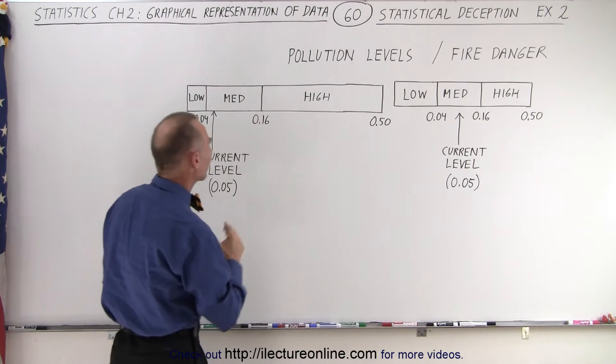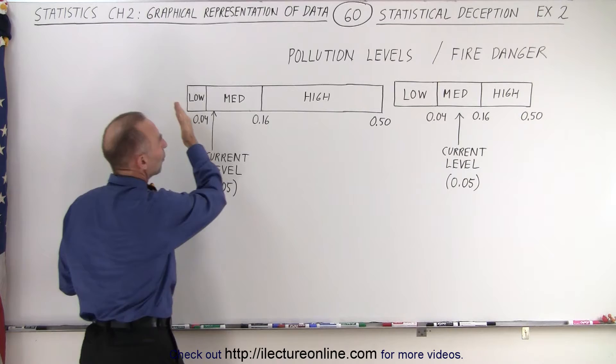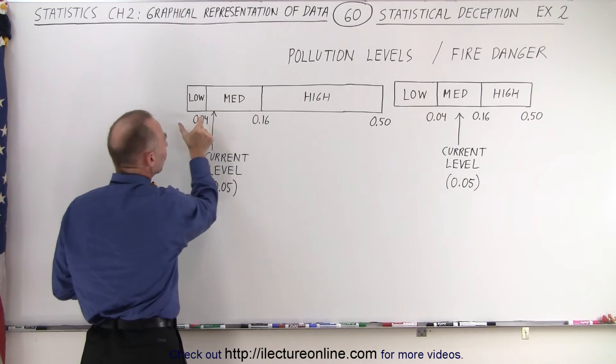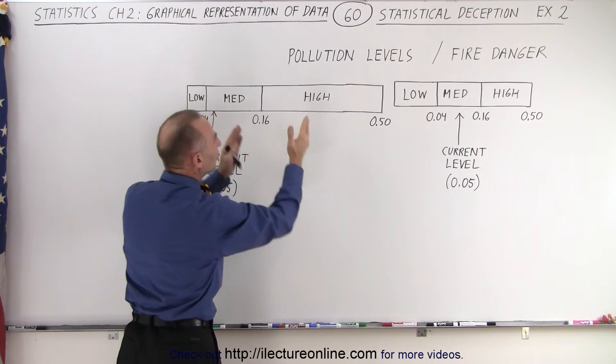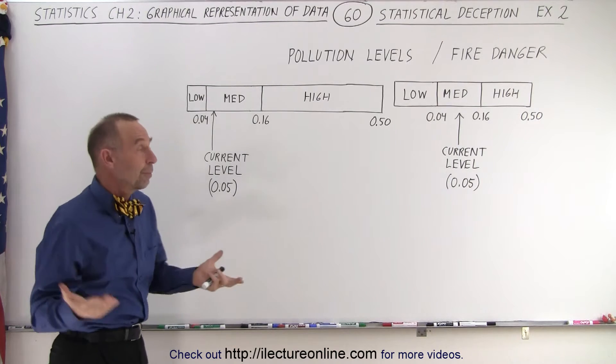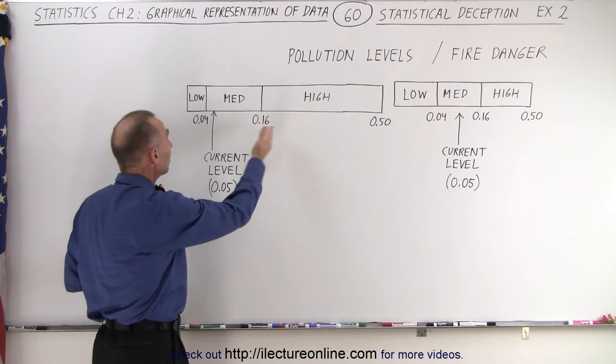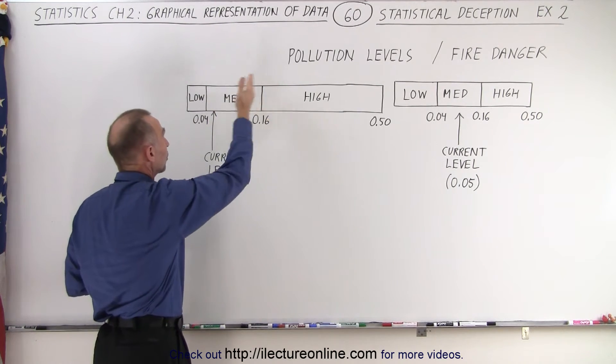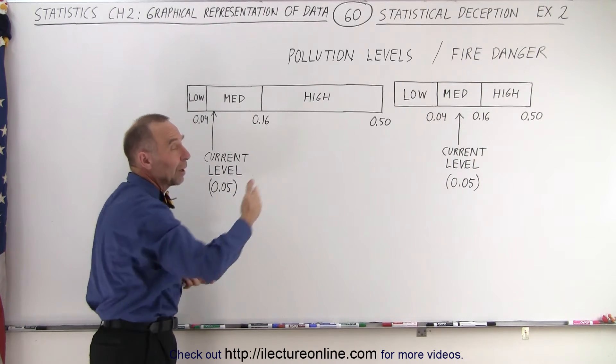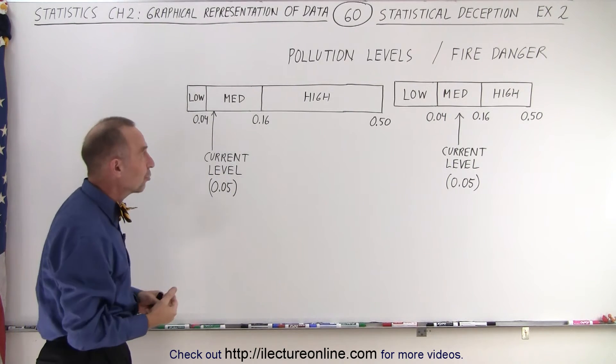Now let's take a look at the graph on the left. First of all, we've corrected the size of the boxes to represent the true width of each of the boxes, depending upon some scale that we determine the pollution levels with, or some scale by which we determine the fire danger with.